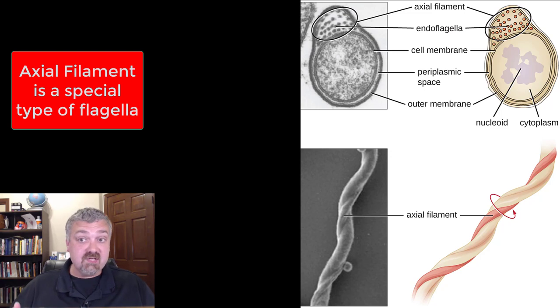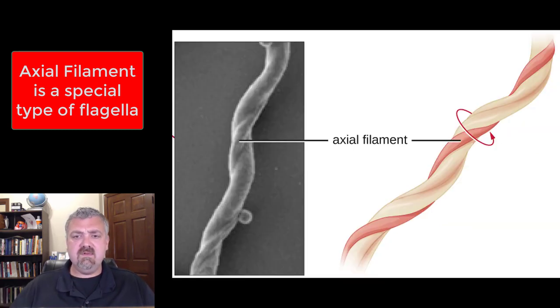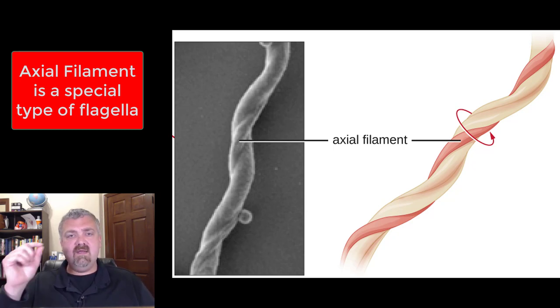The axial filament is a special type of flagella. As you can see here, it's called an endoflagella. Let's go ahead and move a little bit closer here. So the axial filament is a flagella that's attached on one end and then coils around the organism.